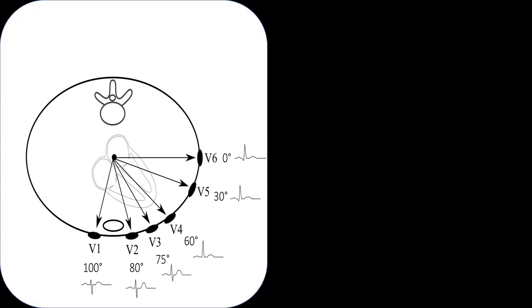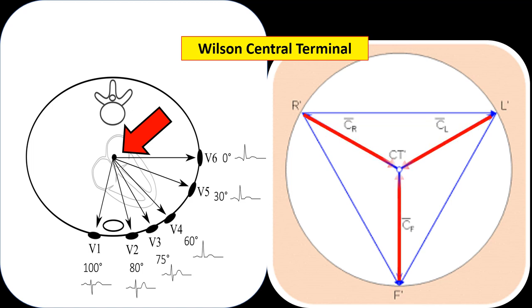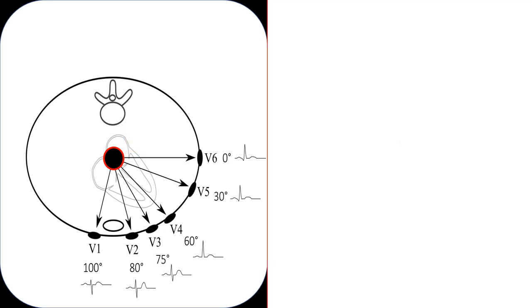The six unipolar chest leads are V1 to V6. The negative reference point of the six chest leads is the Wilson Central Terminal, which is computed by connecting all three limb electrodes to one terminal, located approximately in the center of the thorax. Each chest lead consists of a positive electrode strategically placed on the chest of the patient. The proper position of the positive electrode for the six chest leads is essential for a valid tracing to be made on the ECG machine. With these six chest leads, you will see this plot along the horizontal plane.